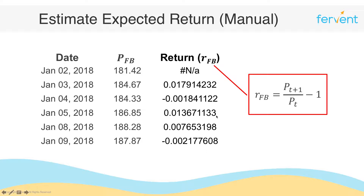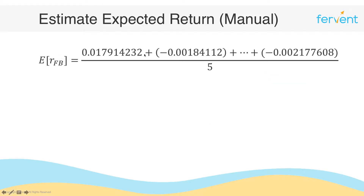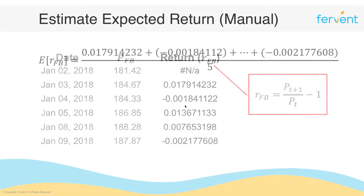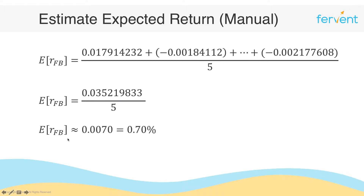So we get the returns as they are and then all we need to do is take the mean. In this case we have 5 observations — add all of the individual returns and divide by 5. Why 5? We started with 6 observations for price, but given that return is pt plus 1 over pt, the first observation has no prior price, so you always lose one observation when calculating returns. Add all 5 returns up, divide by 5, and you've got your expected return, which is approximately 0.70%.